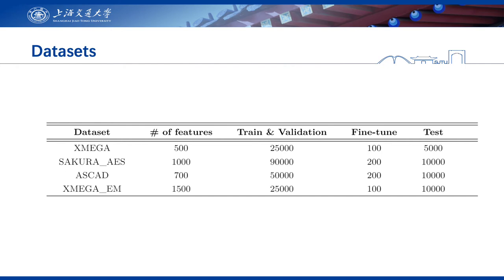To evaluate our methodology, we consider four datasets covering the main types of side-channel attack scenarios. The XMEGA dataset is created from eight XMEGA chips by measuring the power consumption when running an unprotected AES algorithm. The Secura dataset is created from three Secura-G evolution boards, corresponding to an unprotected hardware implementation of AES on FPGA. We also use the well-known AES dataset to show the potential of our method in removing noise and countermeasures. Finally, the XMEGA-EM dataset provides electromagnetic measurements from the eight XMEGA chips, using the same probe at different positions and distances.